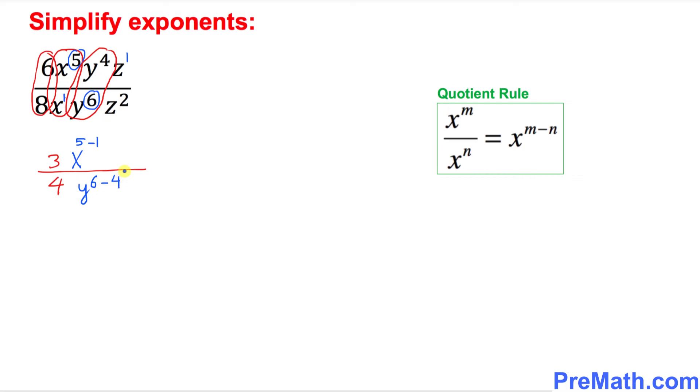And once again, now we will be doing z variables. The base is z. This time, once again, we can ask ourselves, which one has the highest power, top or the bottom? We know that the bottom has the highest power. So that means z is going to show up at the denominator, and once again it's going to be 2 minus 1.